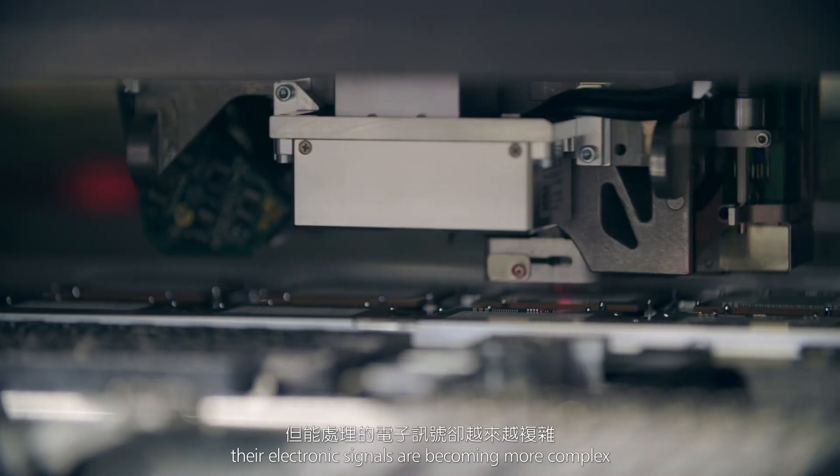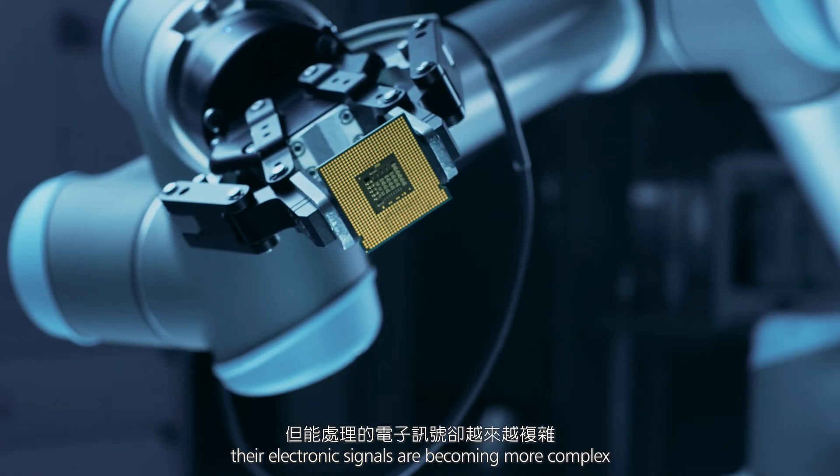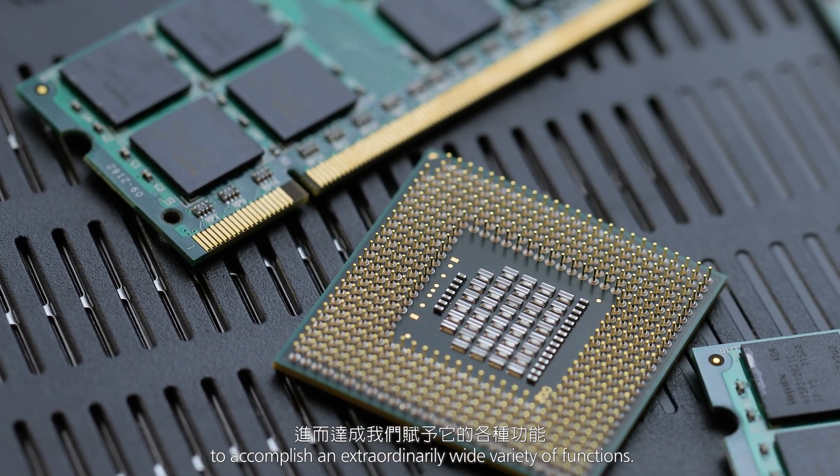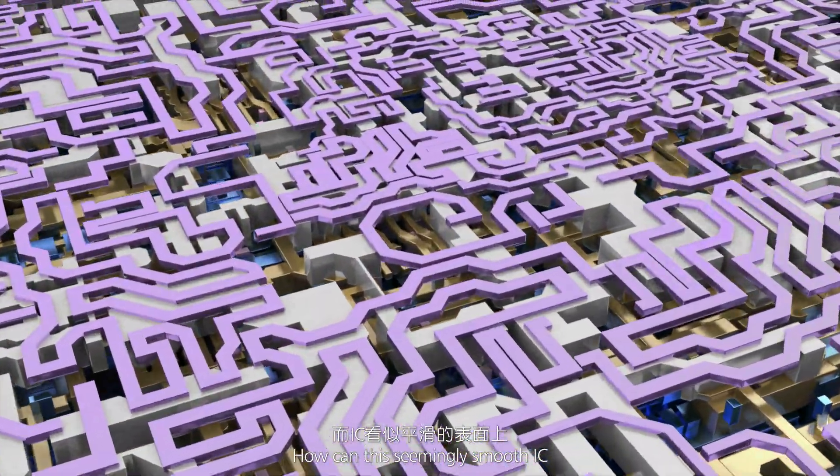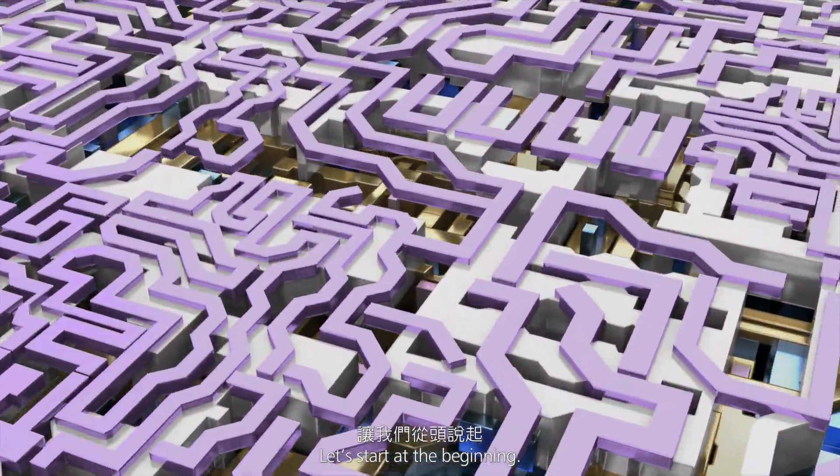As ICs are getting smaller and smaller, their electronic signals are becoming more complex to accomplish an extraordinarily wide variety of functions. How can this seemingly smooth IC have so many components? Let's start at the beginning.